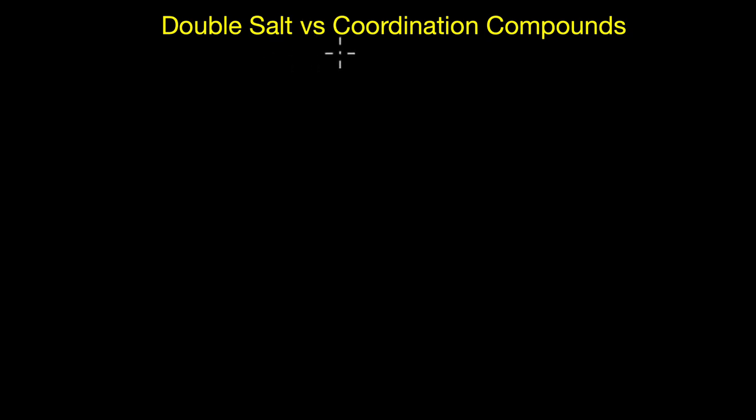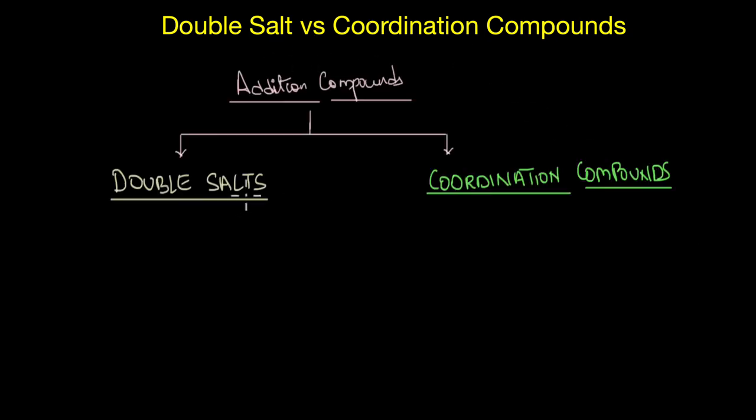Both double salts and coordination compounds are actually addition compounds. That is, they both are formed when stoichiometric amounts of two or more stable compounds join together.